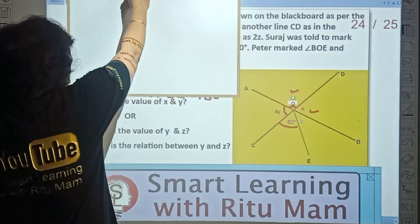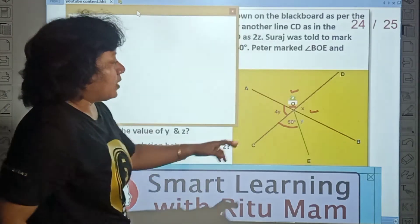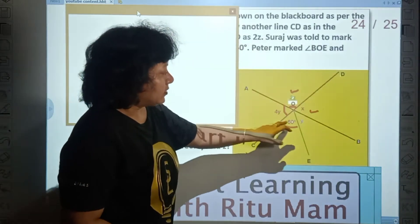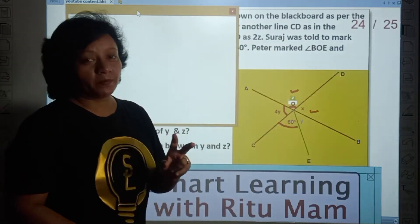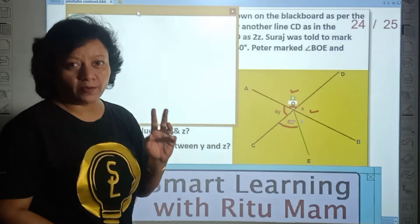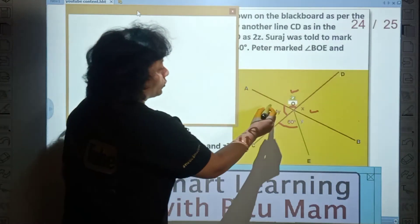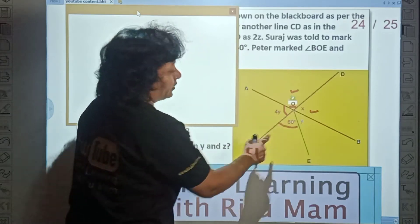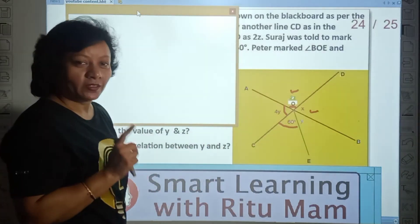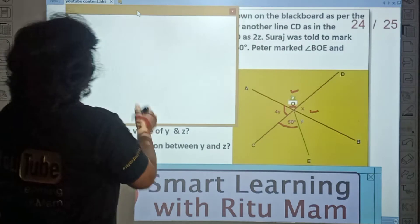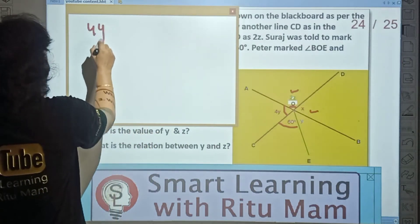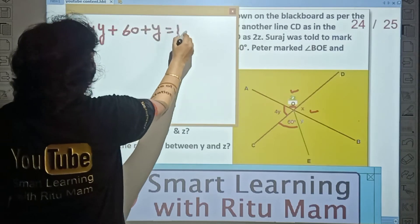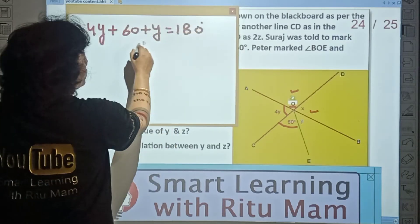First X and Y. You can easily find which angle. Look carefully, linear pair can also apply and vertical opposite angles. AB is a straight line. 4Y plus 60 plus Y, how much will it be? 180. As AB is a straight line.